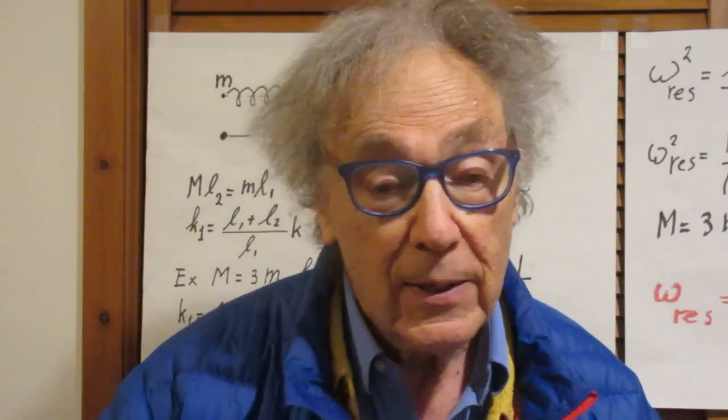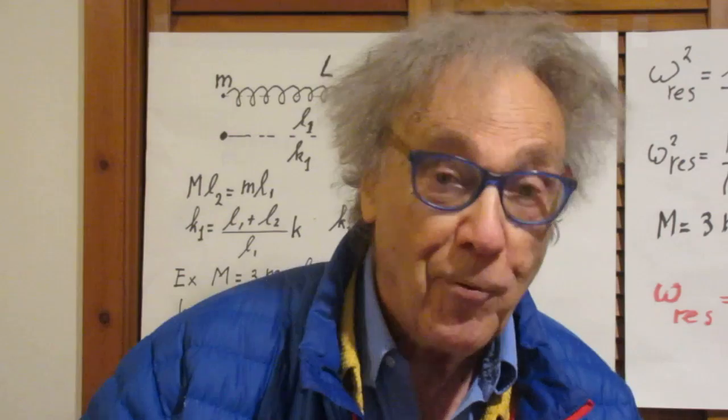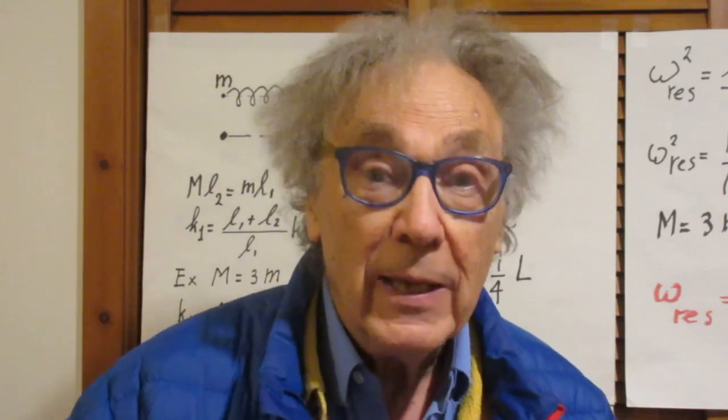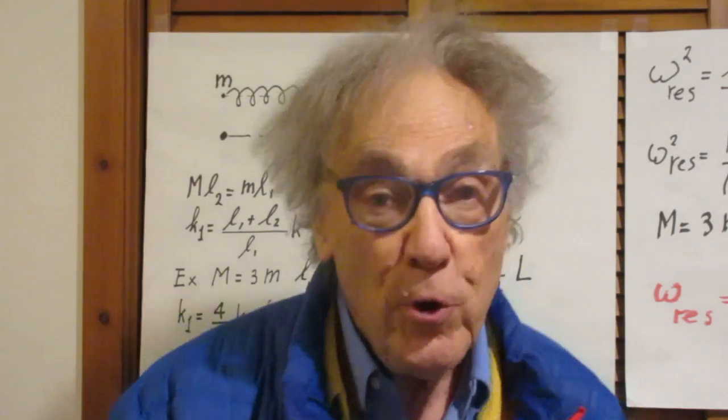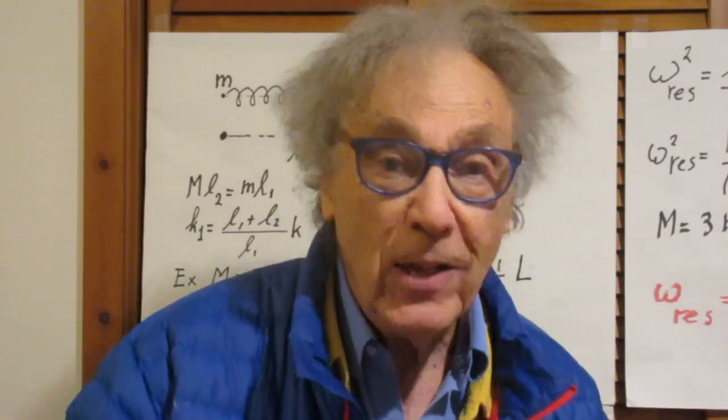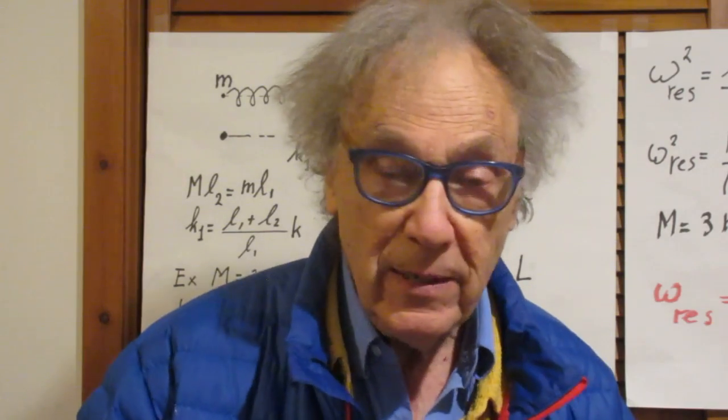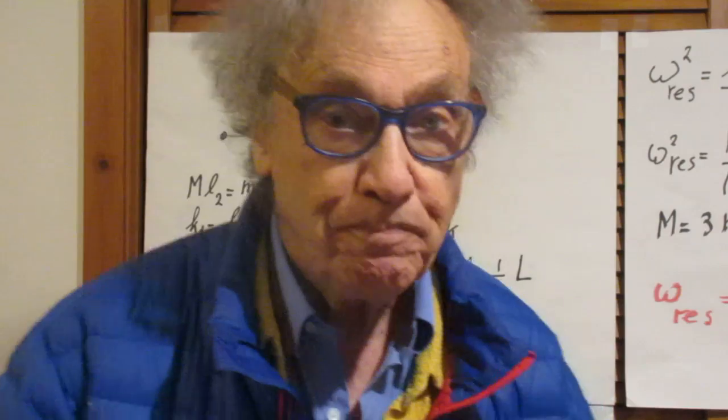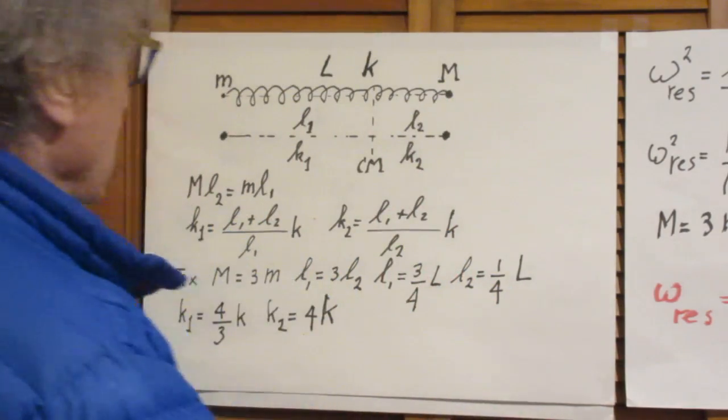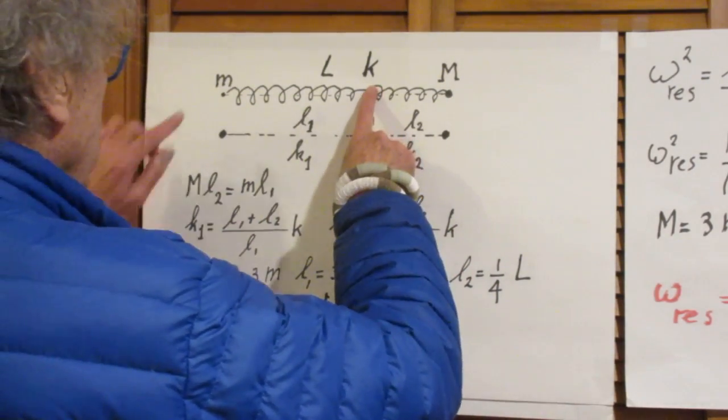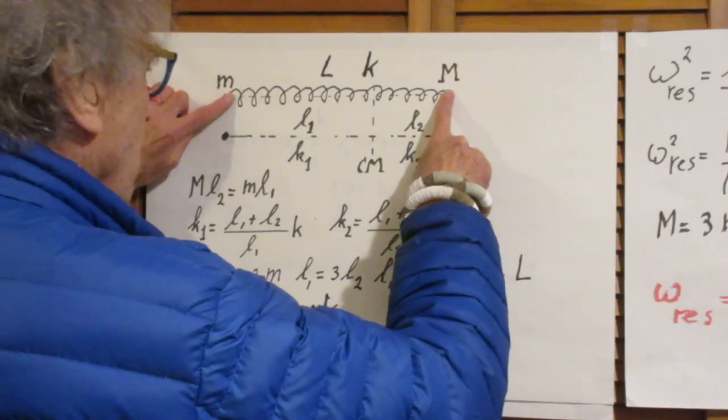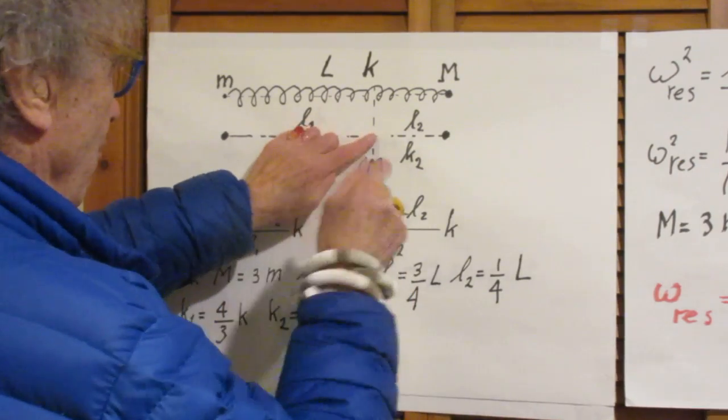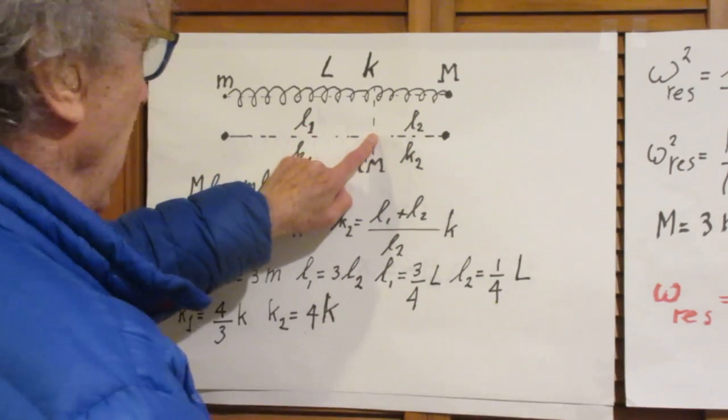The easiest way, I would think, is just to assume that the center of mass is not moving. So you could take a nail and you could nail the spring to the table at the center of mass. So here is the center of mass, between little m and capital M. And we put a nail in here and the center of mass is fixed on the table.